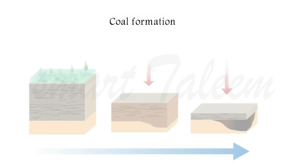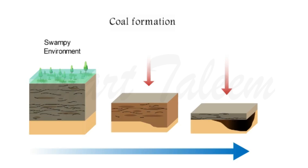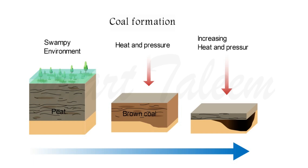Now let's talk about the formation of coal. In the beginning, due to the swampy environment, plants fall — due to floods — and get buried into the ground, taking the shape of peat. Then more pressure and heat are applied on the peat, and it is transferred into brown coal. With further increasing heat and pressure, brown coal is finally converted into black coal. This process does not take a few years — it takes millions of years for plants and wood buried underground to convert into coal.